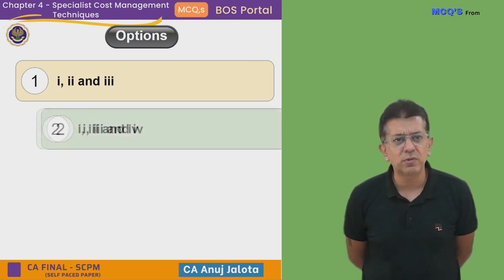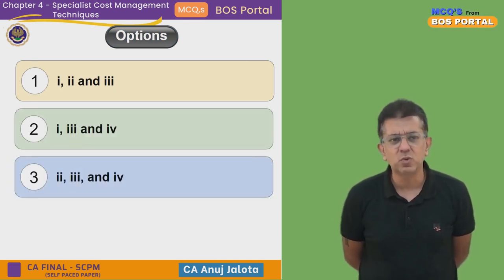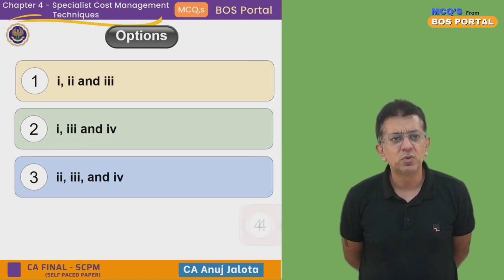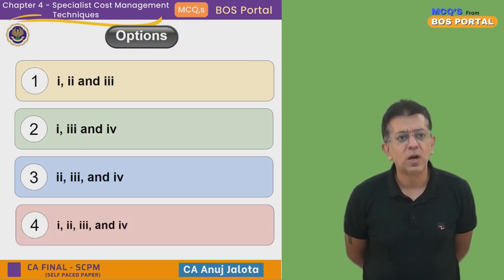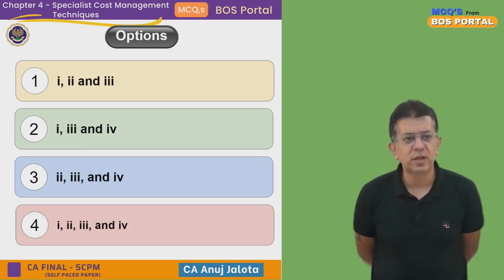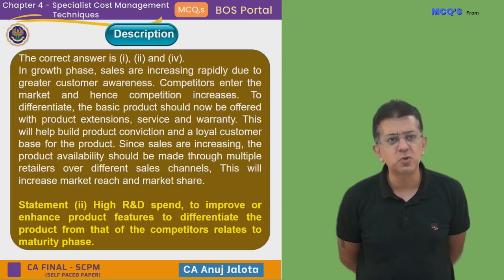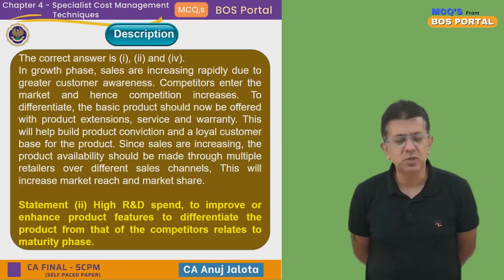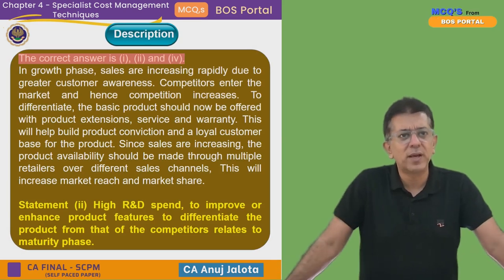So options one, three, and four actually make sense to me. Looking at the answer choices: one two and three, one two and four, two three and four, or one two three and four. I'll go with one two and four as my answer. Given the description, the correct answer is one two and four.